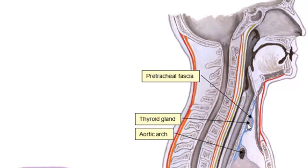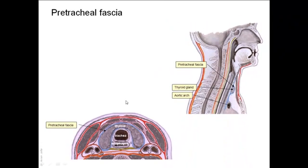The pretracheal fascia also extends down into the superior mediastinum, reaching the level of the adventitia of the arch of the aorta. That is why a large goiter can extend downwards into the superior mediastinum, producing what we call a retrosternal goiter.